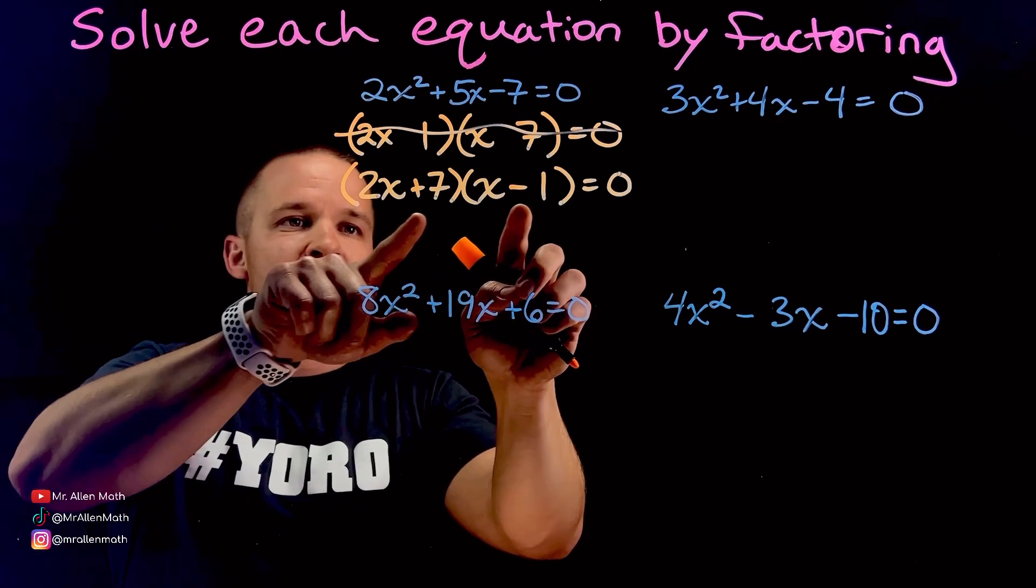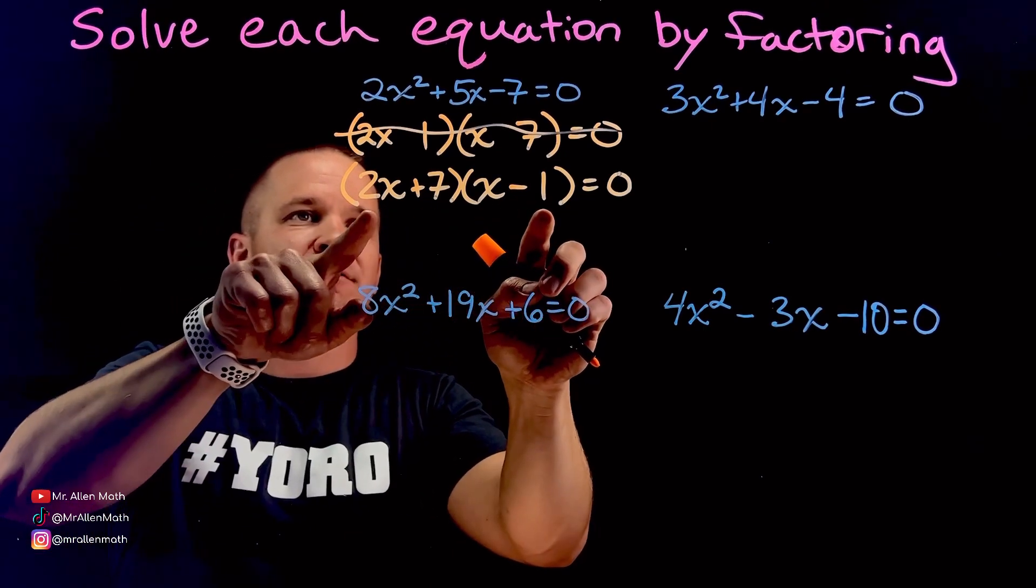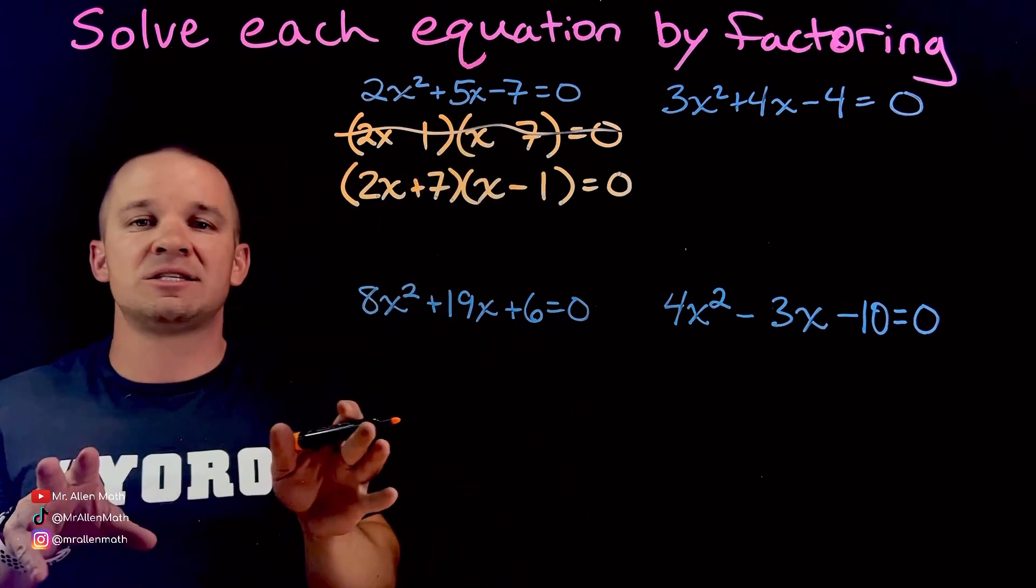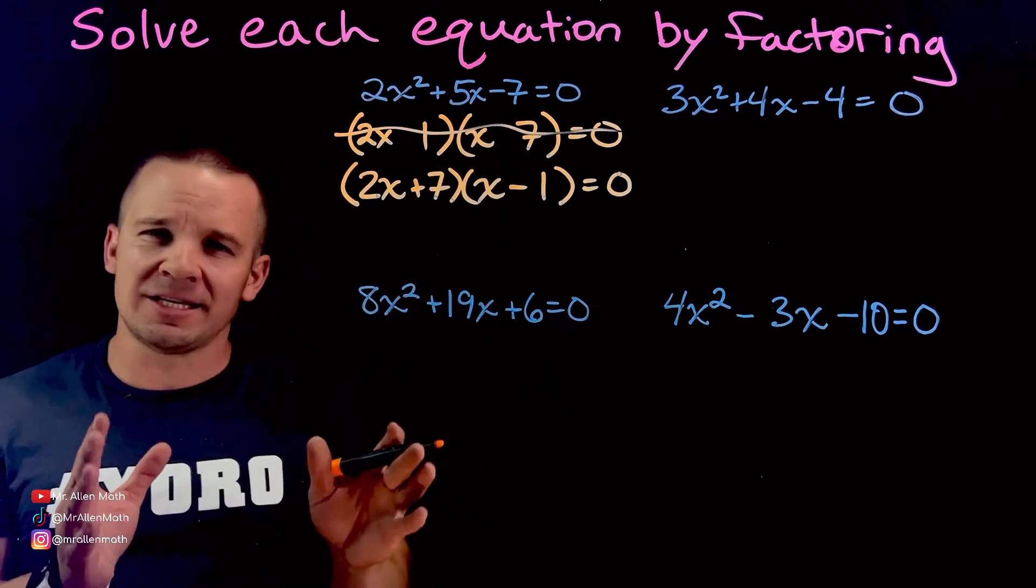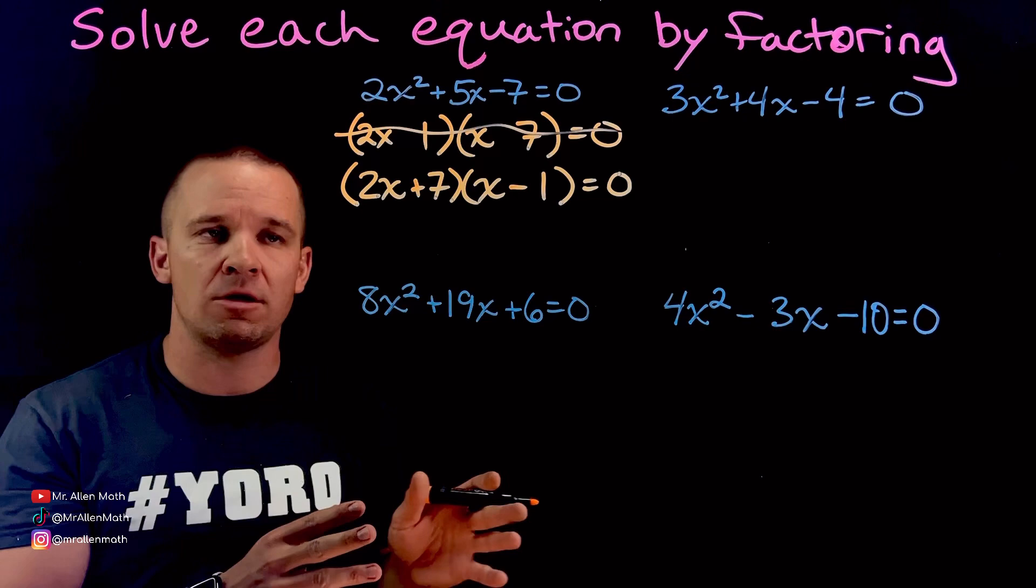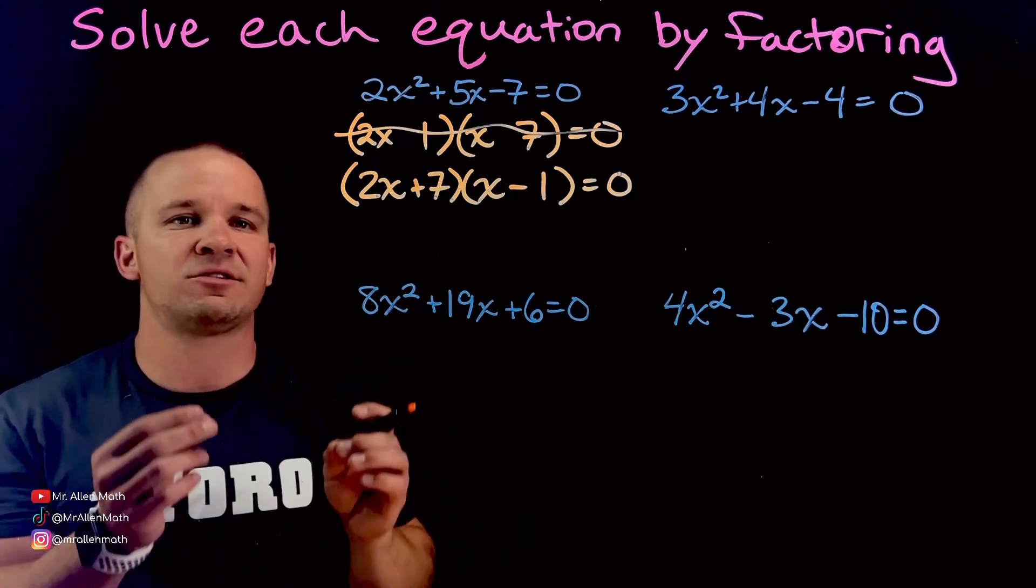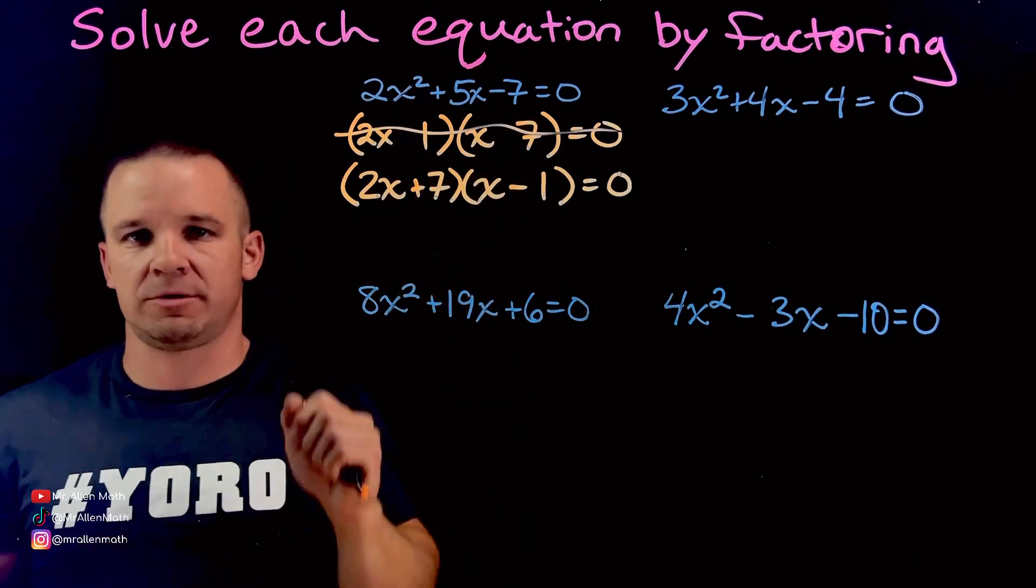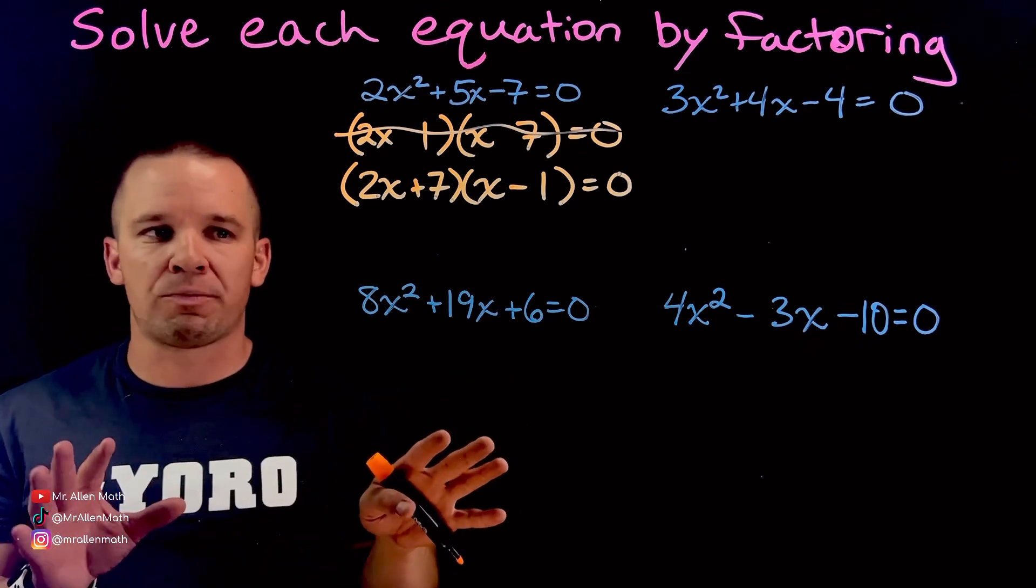And then I guessed again and I checked. 2x squared, negative 7. We get 7x, negative 2x, that adds to the 5x. This is factored. We're good to go. It takes a little bit to get used to guess and check. But with practice, it is a faster method, especially when you're dealing with prime numbers. Easier to go with prime numbers.